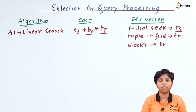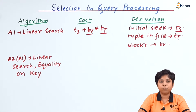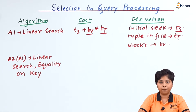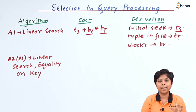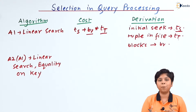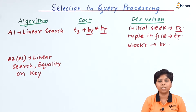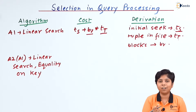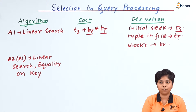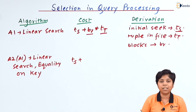Linear search has another case: matching with an equality key on the primary index. If we are searching with an equality key — say city equals Mumbai — when we reach that match it stops scanning and returns the desired output. The block transfer will cover only half the cases on average, since the matching record may be in the first or second half. There is at most one record satisfying the selection condition.